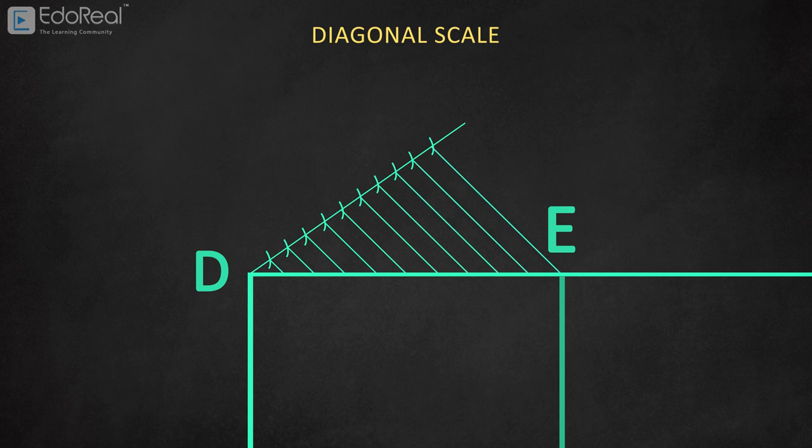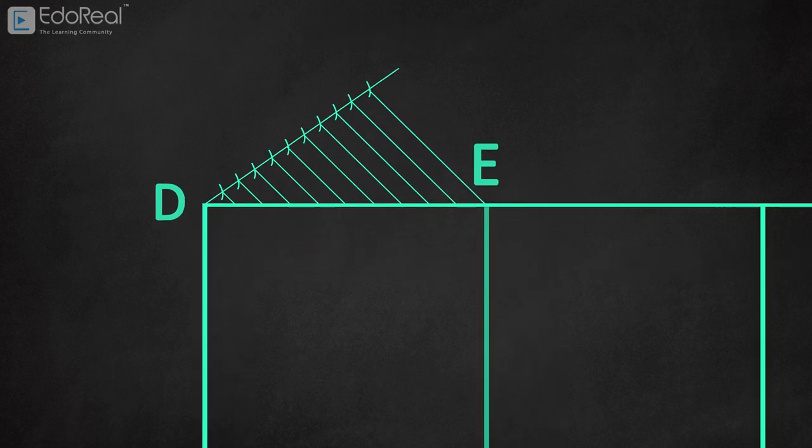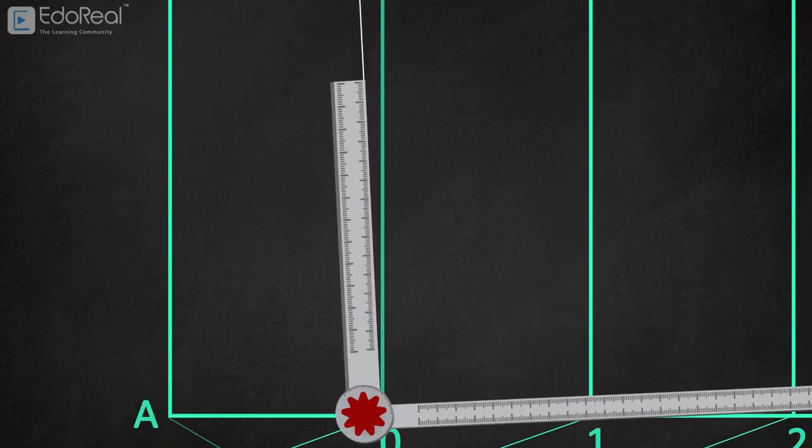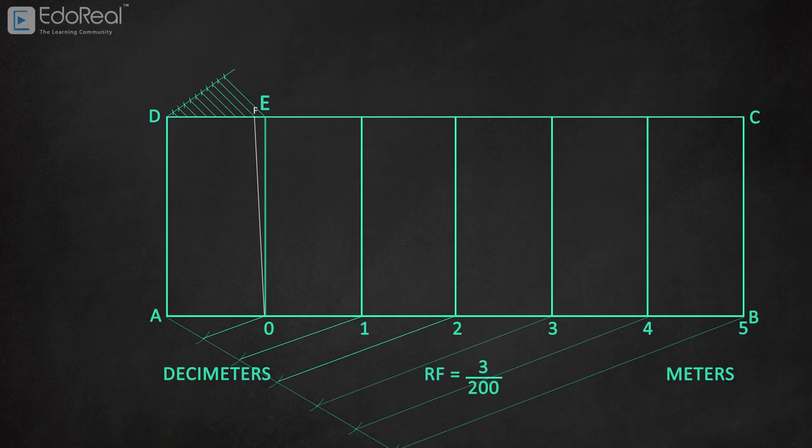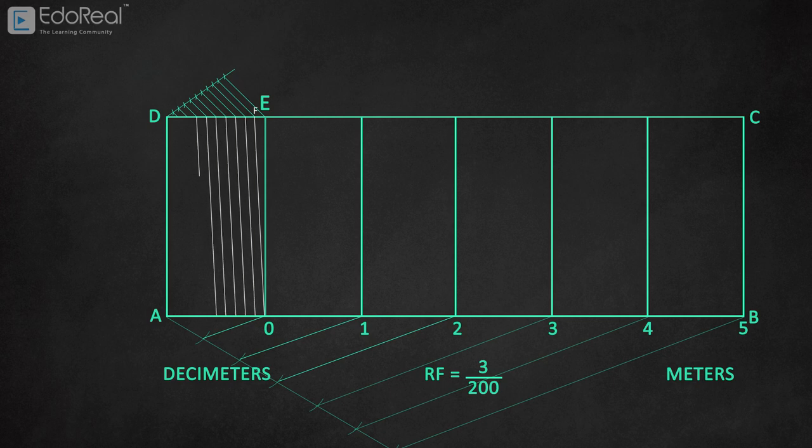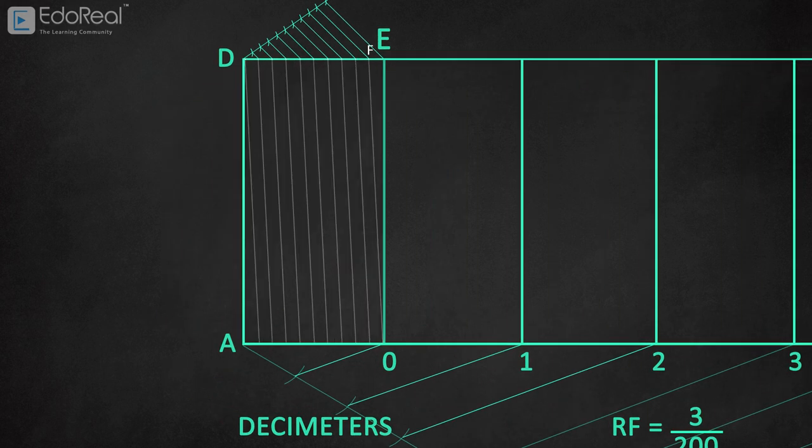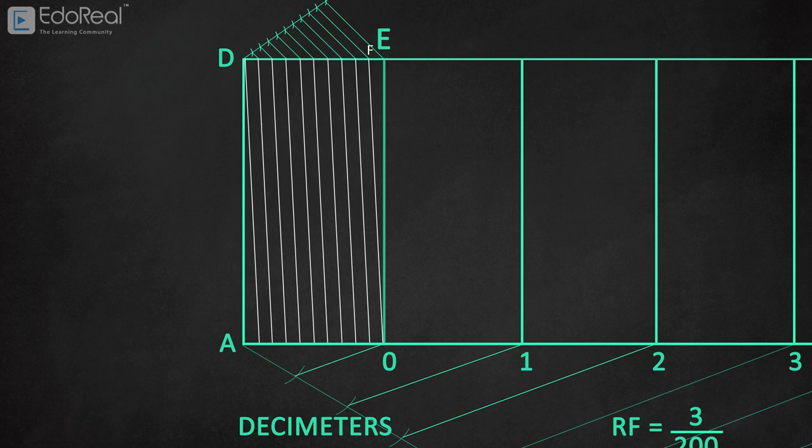But here we draw the line from intersection point to the point 0 using a mini drafter. Name it as the point F. Keeping the drafter fixed, we draw all 9 lines from their intersection points parallel to each other. Here each division indicates 1 decimeter, let's number them from 1 to 10 towards left from 0.